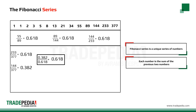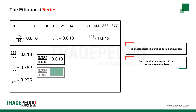If we left a second number in the middle empty and divided 89 by 377, we get another ratio, the 0.236. Again if we divide 0.236 by 0.382, we get 0.618.